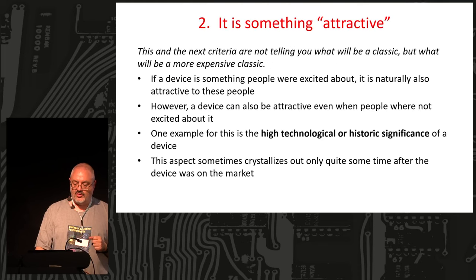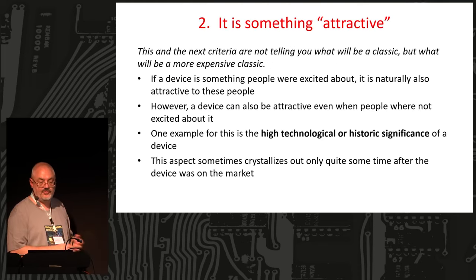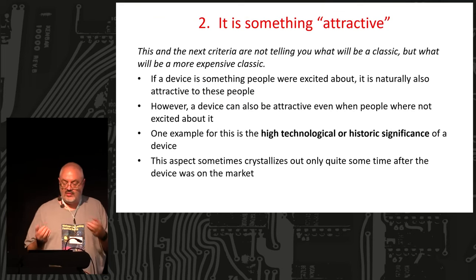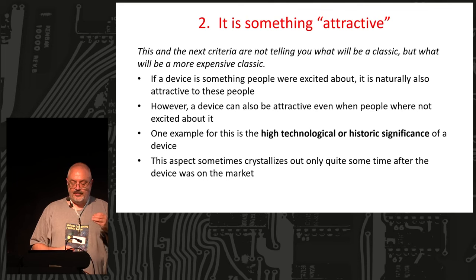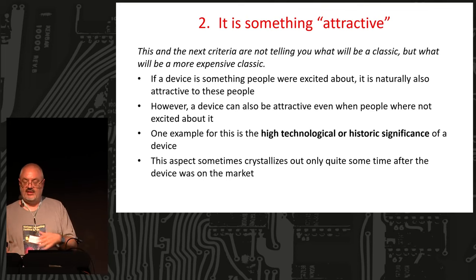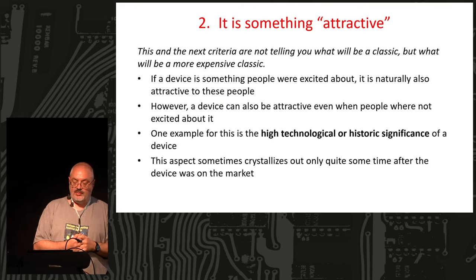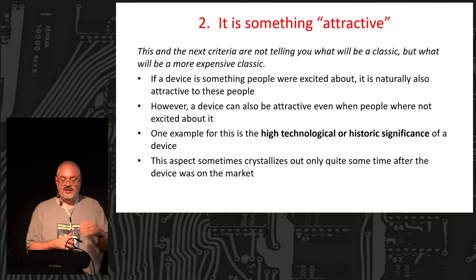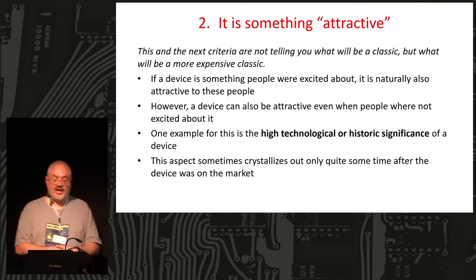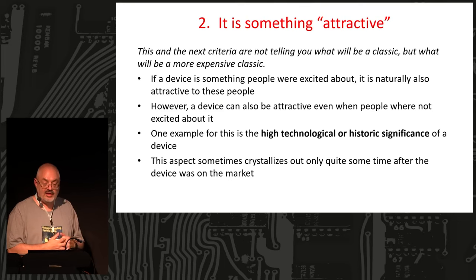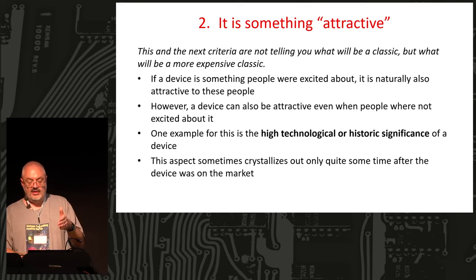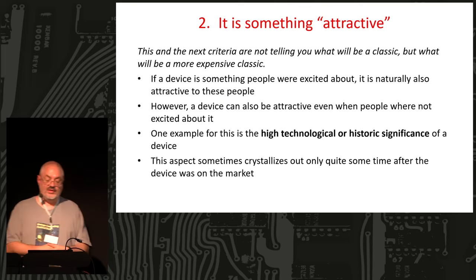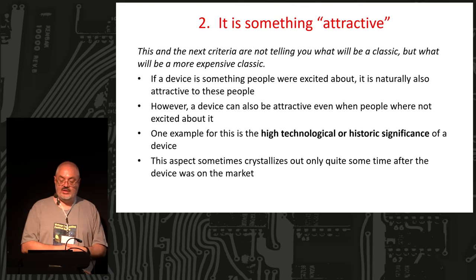But that's not the only criterion — it also needs to be somehow attractive. This and the next criteria don't tell you what will be a classic, but what will be a more expensive and more desirable classic. Some devices can be attractive even when people are not necessarily excited about them — an example is a device with high technological or historical significance. This historical significance is often not clear at the beginning but crystallizes out only after the time a device has been on the market.